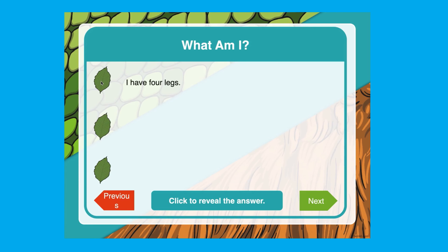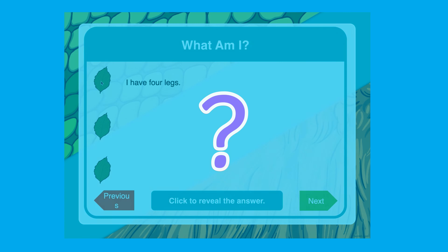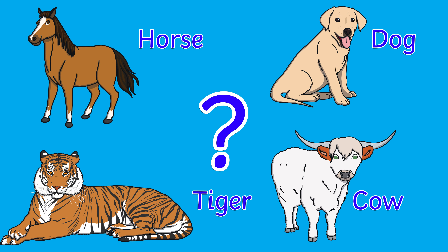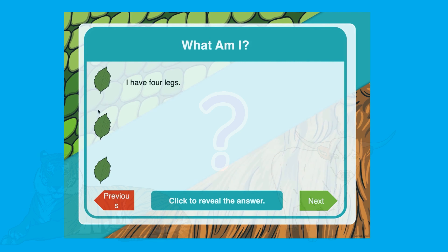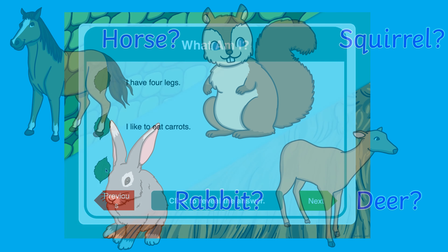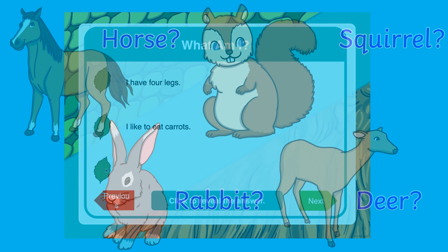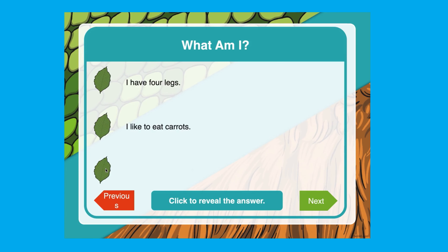Hmm, what animals have four legs? Can children make suggestions? Great ideas, but I think we need another clue. As you progress, the clues provide lots of opportunities to develop a deeper understanding of the natural world. Long ears — it must be a rabbit!